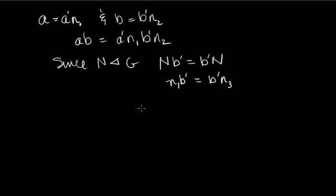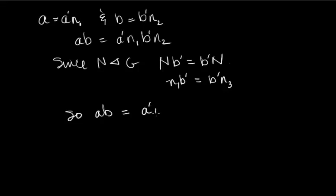It might be N1, maybe not. But since N is normal, the left cosets are the same as the right. So if I write little N1 times B prime, I know that also is in B prime capital N, so I could write it that way. Now substituting that back, AB equals A prime times B prime, N3, N2.